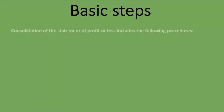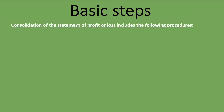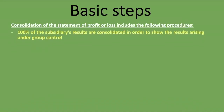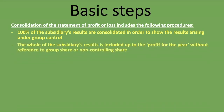Now let's look at the basic steps we follow when consolidating the statement of profit or loss. The first procedure is that 100% of the subsidiary's results are consolidated in order to show the results arising under group control. We are consolidating 100% of the subsidiary's results — all the way from sales, cost of sales, and operating expenses through to the income tax expense — adding everything together line by line.